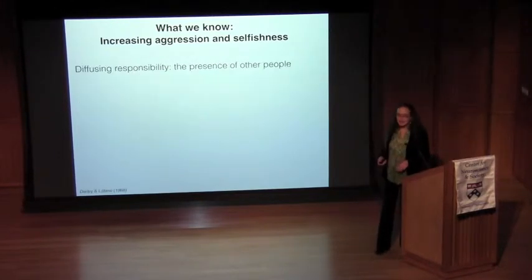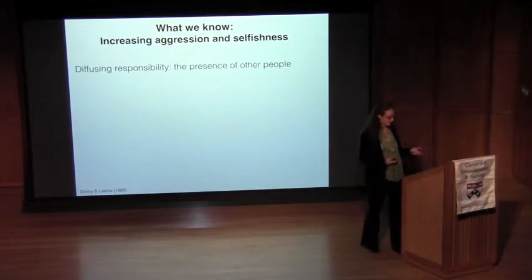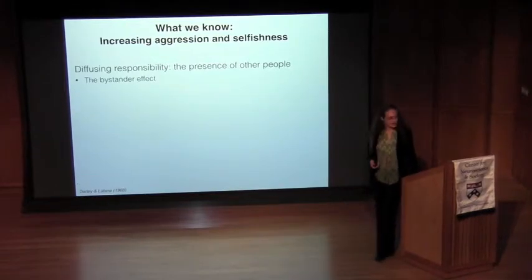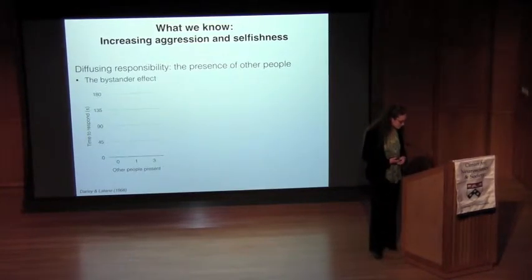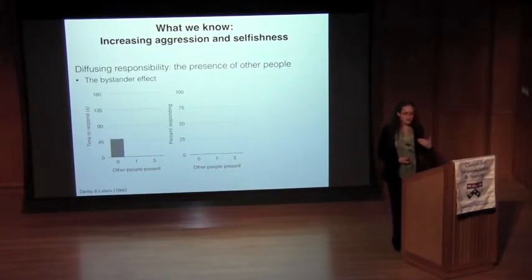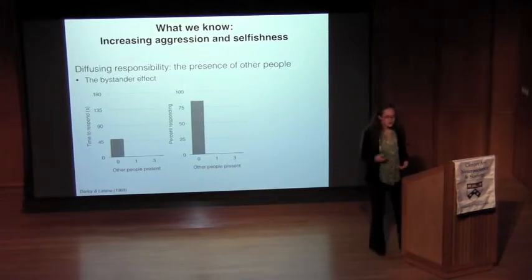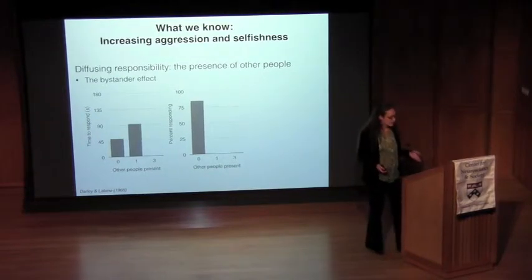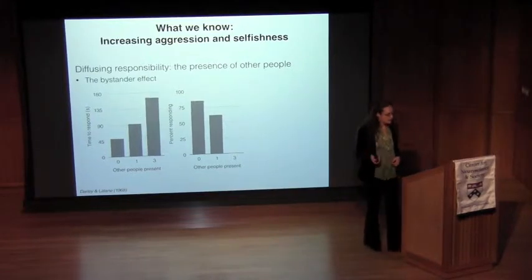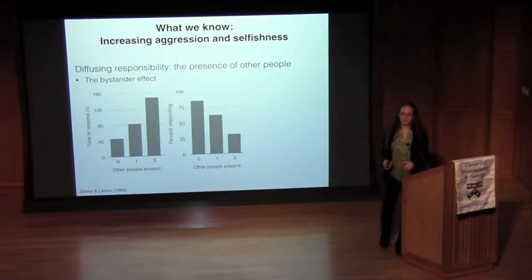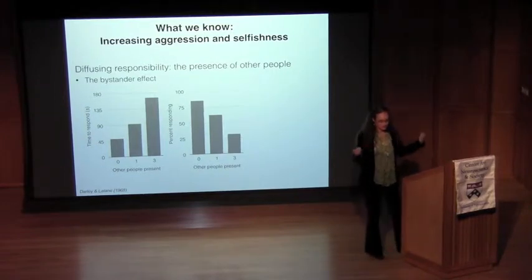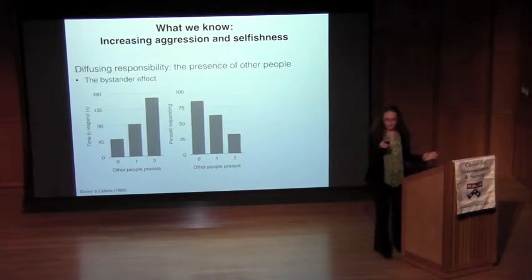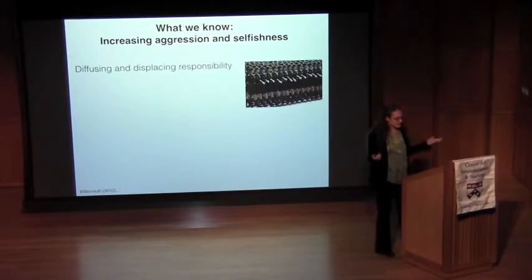Putting people in groups also removes personal responsibility. This is the classic Bystander Effect demonstrated by Darley and Latané in the 1960s: when a stranger falls on the ground having a fit, if you're alone most people stop quickly, but with one other person present fewer people stop and it takes longer. With three other people in the room, even fewer stop and it takes much longer — this is called diffusion of responsibility. The more people there are, the less likely you are to help. Which is why if you're being attacked in a crowd, you should look at one specific person and ask them for help.